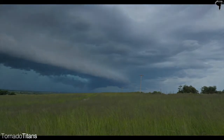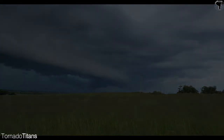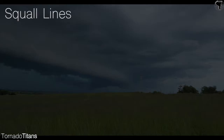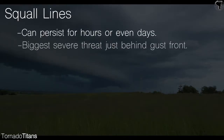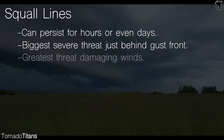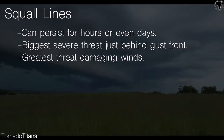Lines of storms can persist for hours and even days as they move east or south. A line of storms will see its biggest severe weather threats along and just behind the gust front. The main severe weather threat from squall lines is damaging winds, but large hail and even weak tornadoes are possible.